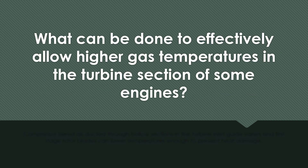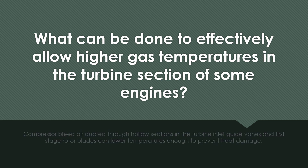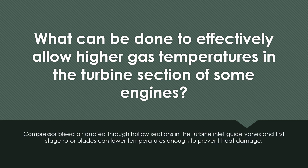What can be done to effectively allow higher gas temperatures in the turbine section of some engines? Compressor bleed air ducted through hollow sections in the turbine inlet guide vanes at the first rotor stages can lower temperatures enough to prevent heat damage.